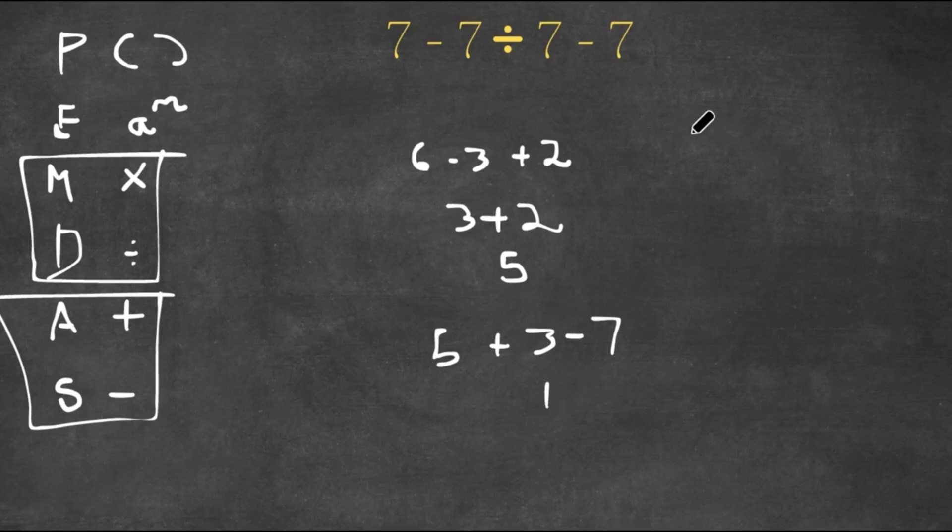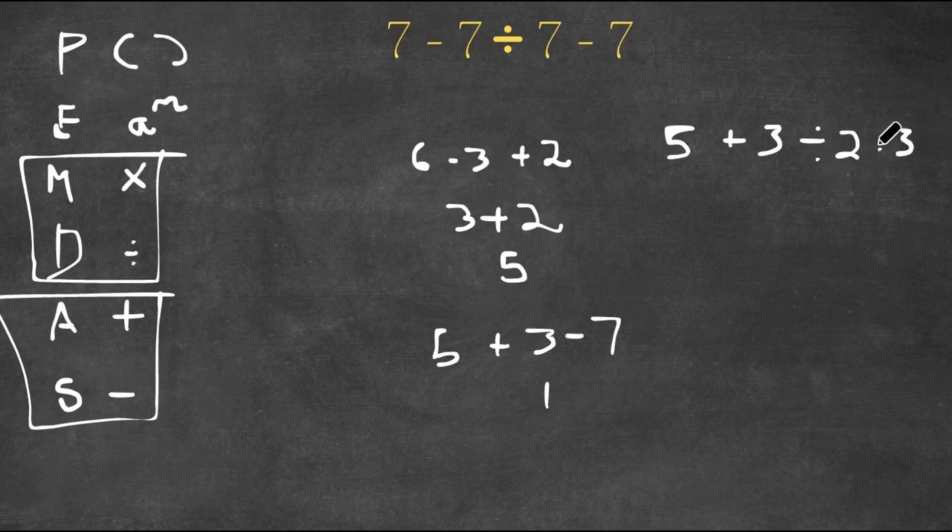Now let's try something a little harder. If I had 5 plus 3 divided by 2 times 3, there are no parentheses, there are no exponents, so then I would go to multiplication and division.